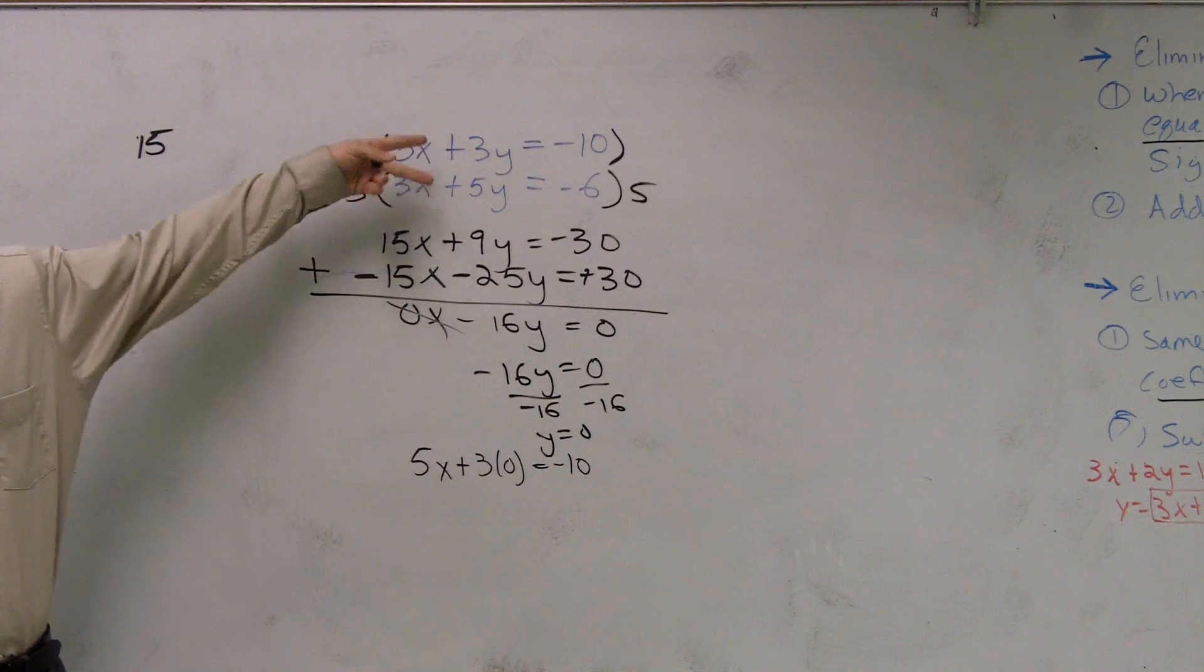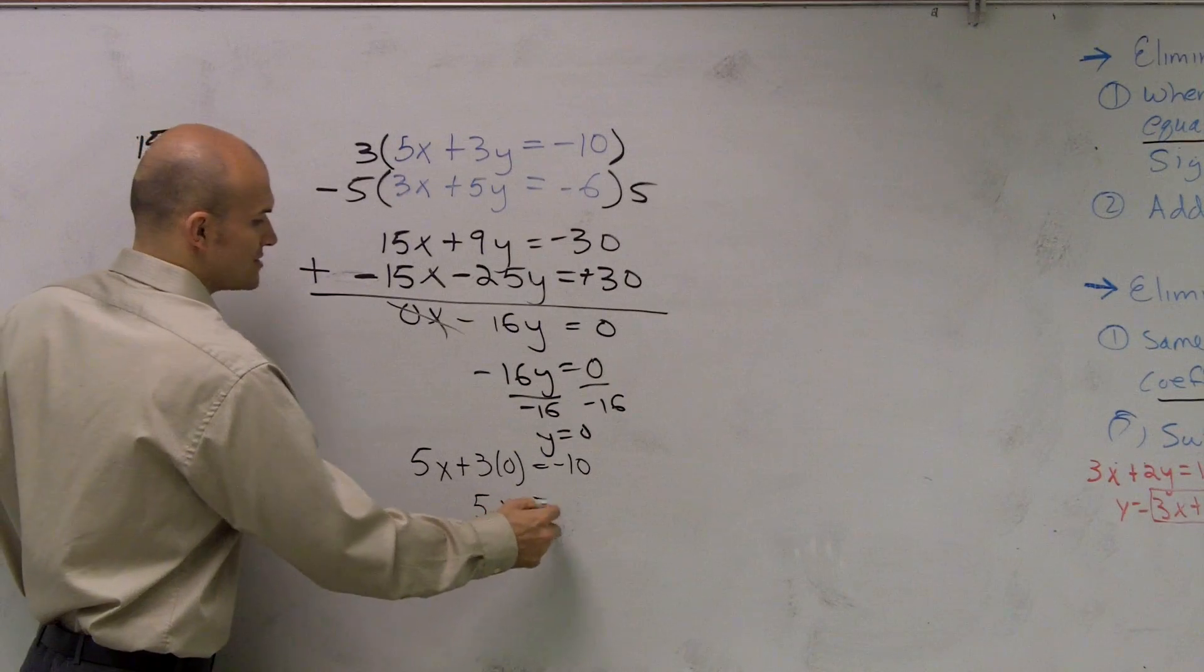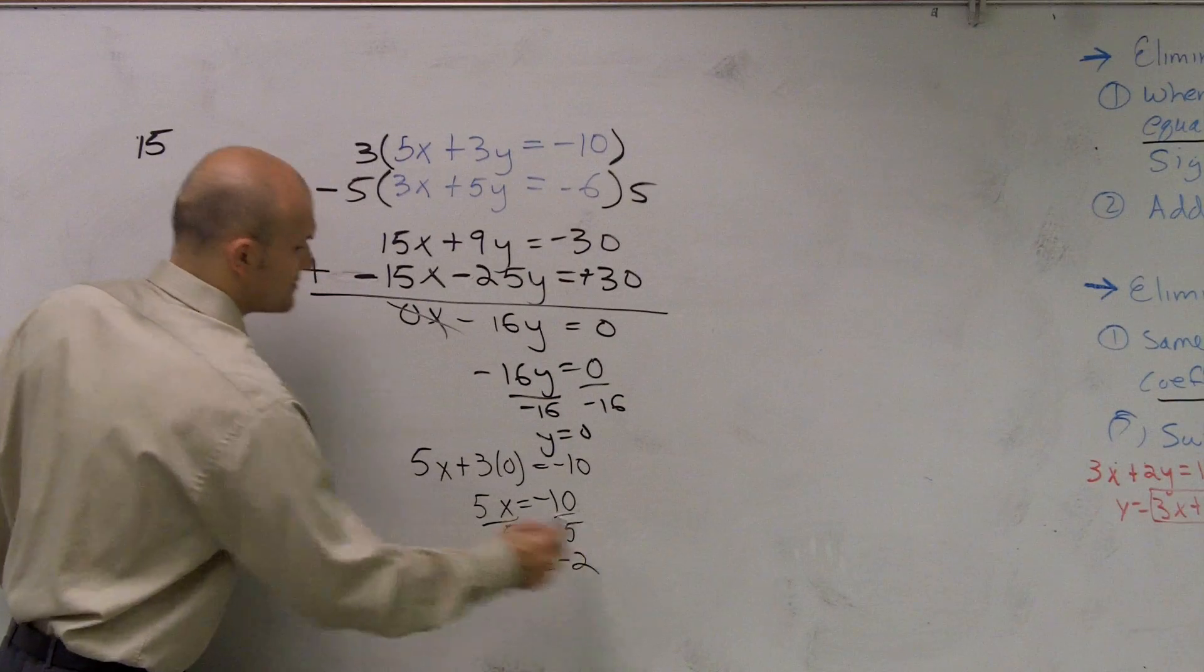Remember, it doesn't matter which equation you plug it in for. So 3 times 0 is 0, I get 5x equals negative 10 divided by 5, x equals negative 2. And that is your solution.